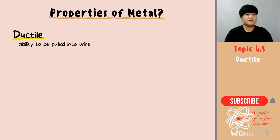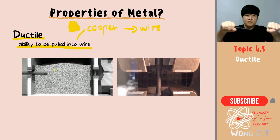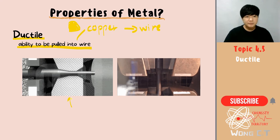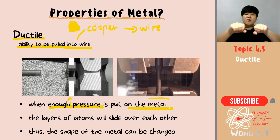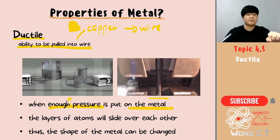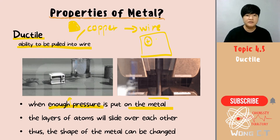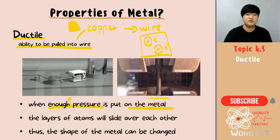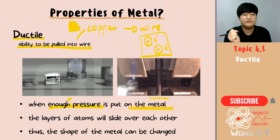The second property is ductility — the ability to be pulled into wire. We know that copper is always used for wire. So how can a block of copper become a wire? When enough pressure is applied and the metal is pulled, the layers of atoms slide over each other, causing the shape of the metal to change. This is because of the electron sea model, where the positive charges and delocalized electrons — moving non-stop — allow atoms to slide over each other, changing the shape of the metal.